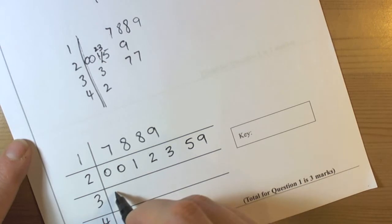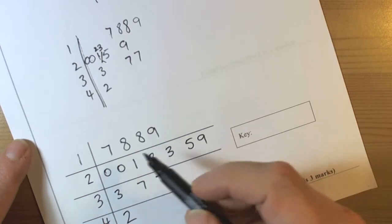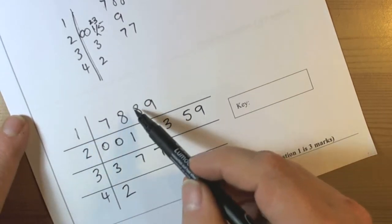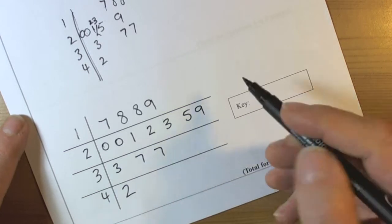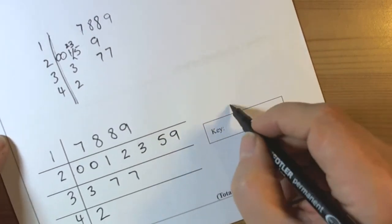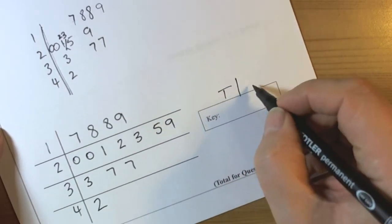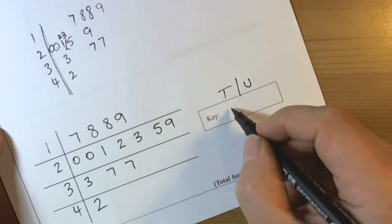Then 3, 7, 7, and then 2. Again, one final check: 1, 2, 3, 4, 5, 6, 7, 8, 9, 10, 11, 12, 13, 14, 15. And the key could be an example. Remember we split the numbers up into tens and units.